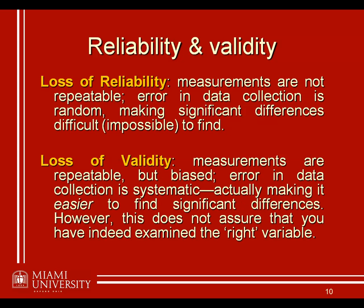A loss of validity — even if we have reliability and our measurements are repeatable — is not a good thing in research, because that means our measurements are biased. In particular, it introduces the first type of error we talked about: systematic error. This is actually going to make it easier to find significant differences, but the differences we're finding aren't necessarily the differences we're interested in — they're not going to be based on the variable we claim they're based on.